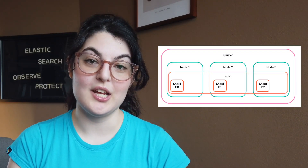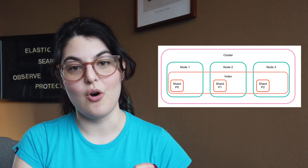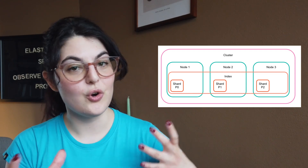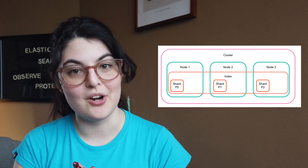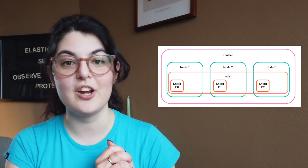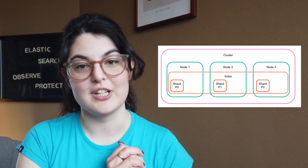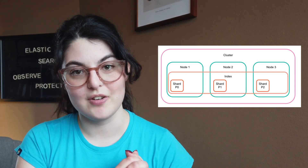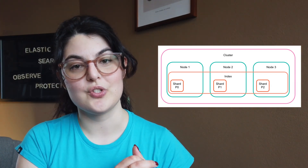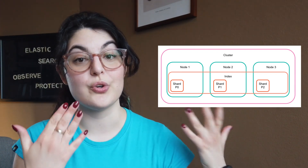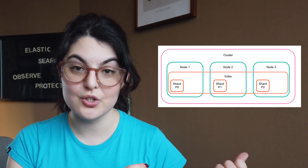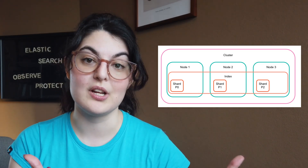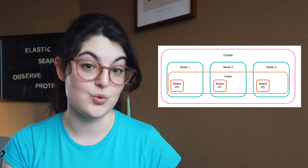When data is added to Elasticsearch it is put into an index, and this runs on a series of nodes, shards, and clusters. If you want a better explanation of that, you can watch episode 2, which covers the architecture of Elasticsearch. Today we're going to talk about how data is actually put into those indexes so that you can explore and use it.